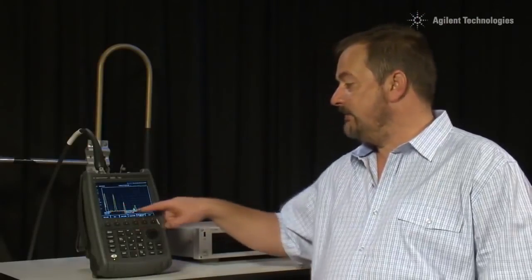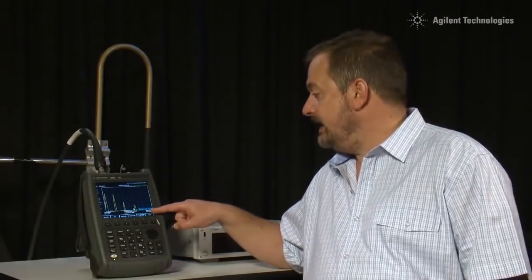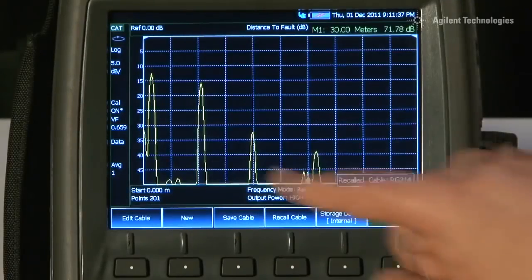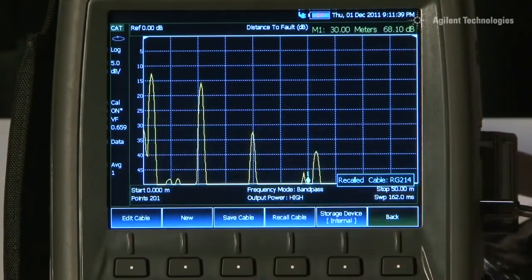So now we have a calibrated x-axis display in meters and on the y-axis we are measuring return loss in dB.